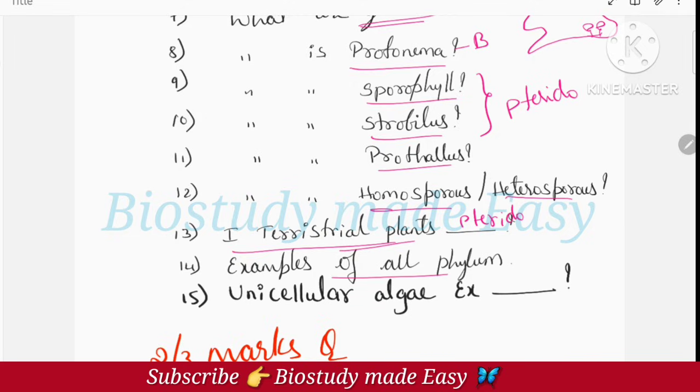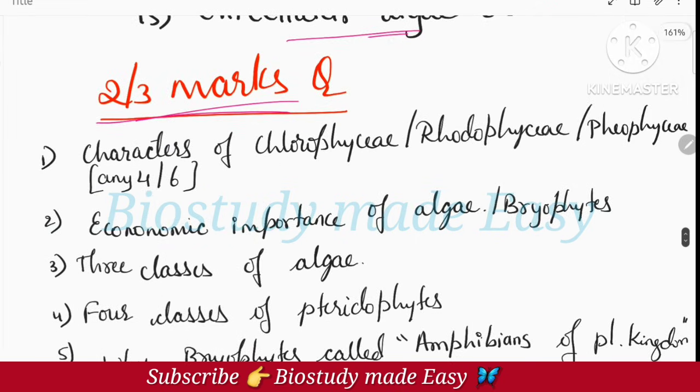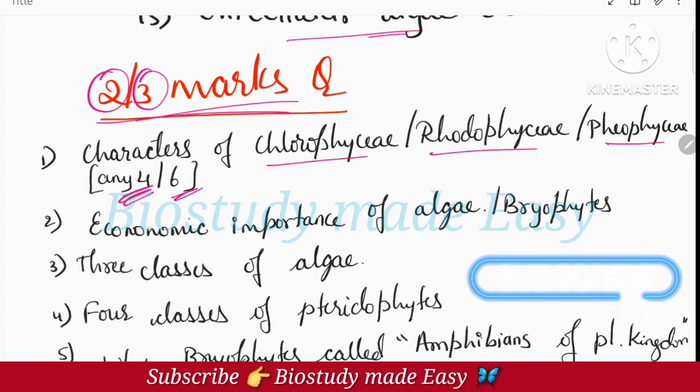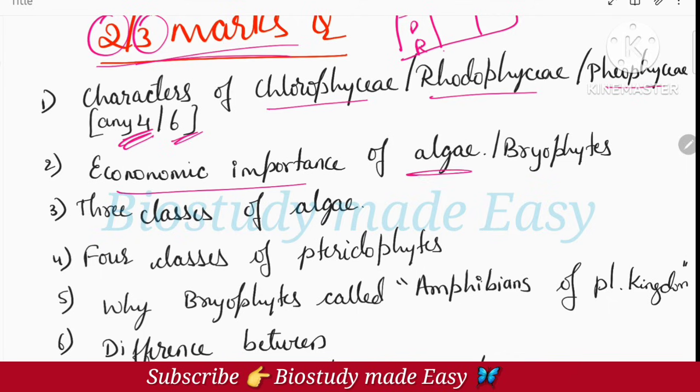Next, difference between homosporous and heterosporous, or what are homospores and heterospores. Next, first terrestrial plants - pteridophytes. Next, examples of all the phylum - you should know because if they give one example, you should know which phylum it belongs to. All examples given in NCERT, you should write. This applies to biological classification also - all examples should be known. Next, unicellular algae example - Chlorella is unicellular algae. Next, 2 mark questions: characters of Chlorophyceae, Rhodophyceae, Phaeophyceae. If they ask 2 marks, give four characters. If they ask 3 marks, give six characters. This table is very important - watch the video. How much will this column cover for you - 1 mark, 2 marks, 3 marks, even 5 marks - how many classifications. So leave that table, you note it and read it. Next, economic importance of algae - very very important question.